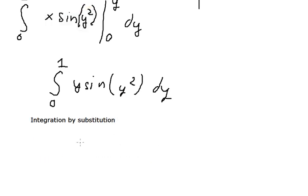So we put u equal to y squared. du we got about 2y dy. Because we don't have 2 in here, so we divide both sides by 2.